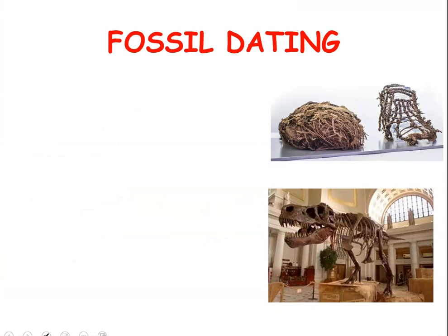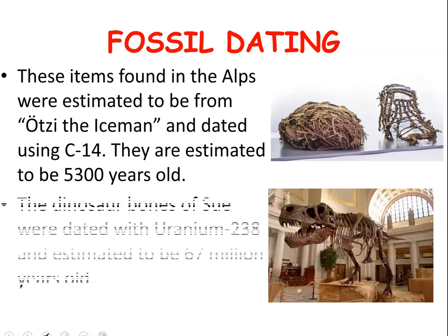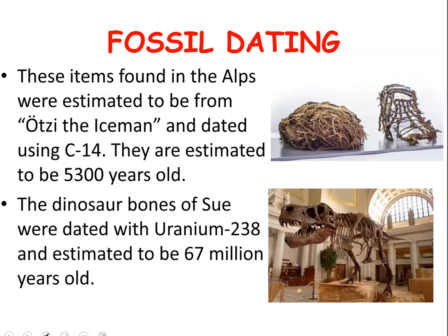We can also use radioactive isotopes for fossil dating. Because they decay over a period of time, some with a slow half-life can be used to date different kinds of fossils. For example, the Iceman was dated using carbon-14 and estimated to be about 5,300 years old, based on how much carbon-14 has broken down into nitrogen over time. Dinosaur Sue was dated using uranium-238, which has a slower half-life than carbon-14, and was estimated at about 67 million years old.